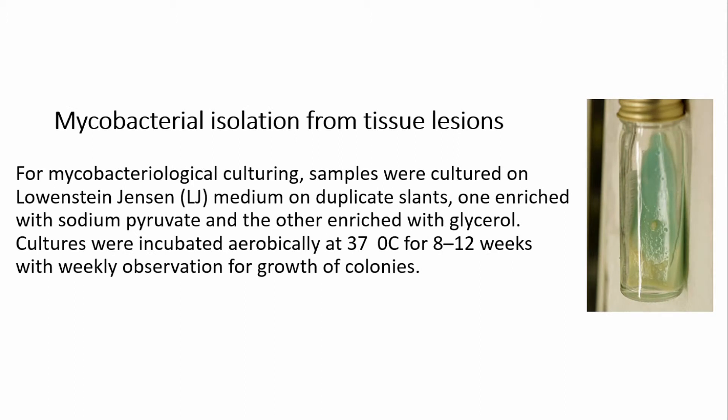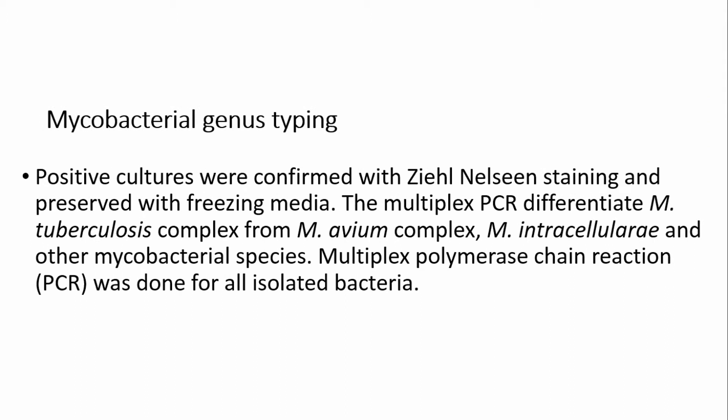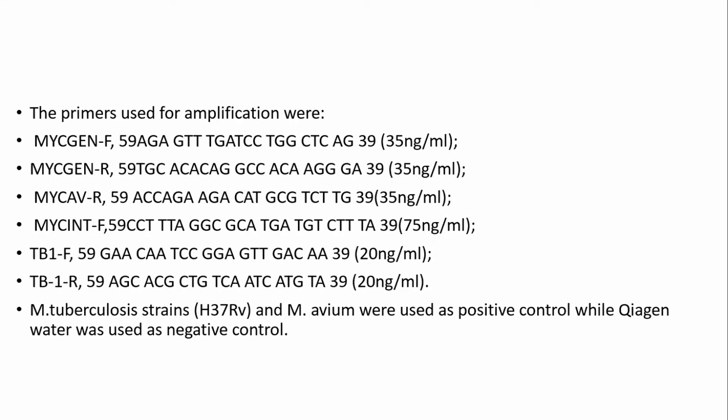For mycobacterial isolation, tissue was cultured on Lowenstein-Jensen media on duplicate slants, one enriched with sodium pyruvate and the other with glycerol. Cultures were incubated at 37°C for 8 to 12 weeks with weekly observation for colony growth. For mycobacterial genus typing, isolates were sent to South Korea for PCR studies.